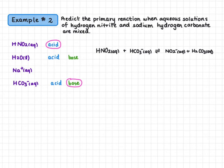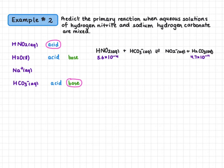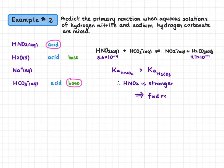The last step is to compare the strength of our two acids. Nitrous acid has a Ka of 5.6 × 10⁻⁴. Carbonic acid has a Ka of 4.7 × 10⁻¹¹. Even though hydrogen carbonate is also an acid, it's not acting as an acid in this reaction — in neither the forward nor reverse reaction is it donating a proton. Comparing only the acids acting as acids: Ka of nitrous acid is greater than Ka of carbonic acid, so nitrous acid is stronger. The forward reaction is favored, giving a product-favored equilibrium.